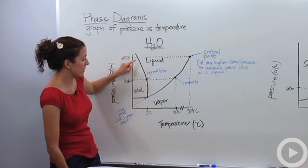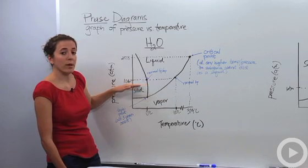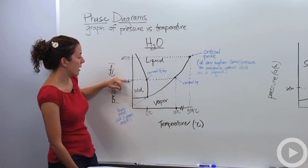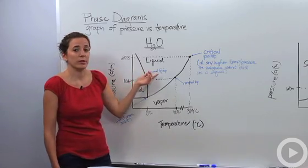Any time it crosses this line here, it's going from a solid to liquid or liquid to solid. Either way, we're going to either have freezing or melting going on. Notice that at one atmosphere, which is what we know, one atmosphere and zero degrees Celsius is a normal freezing point and melting point.